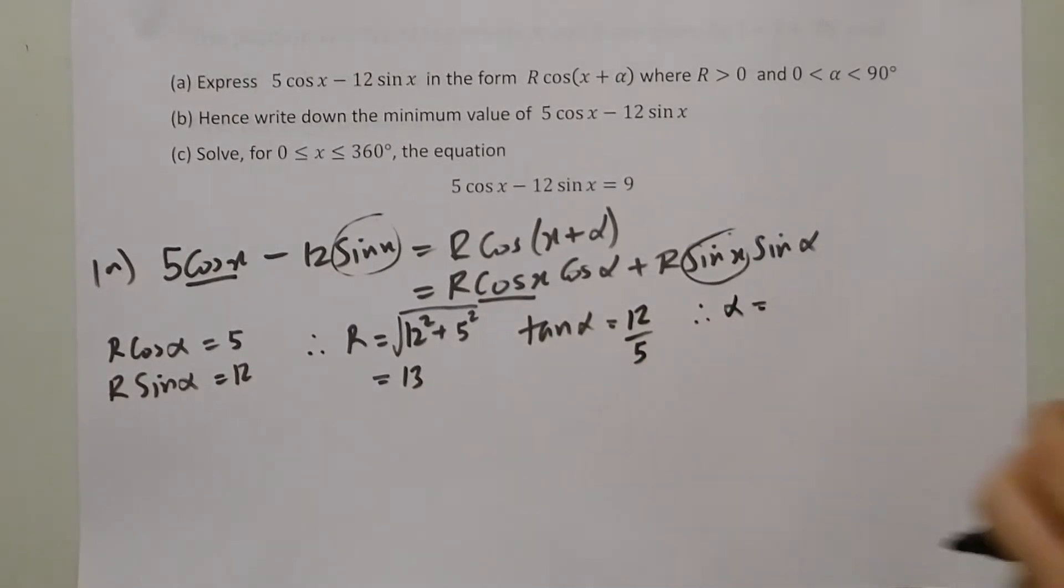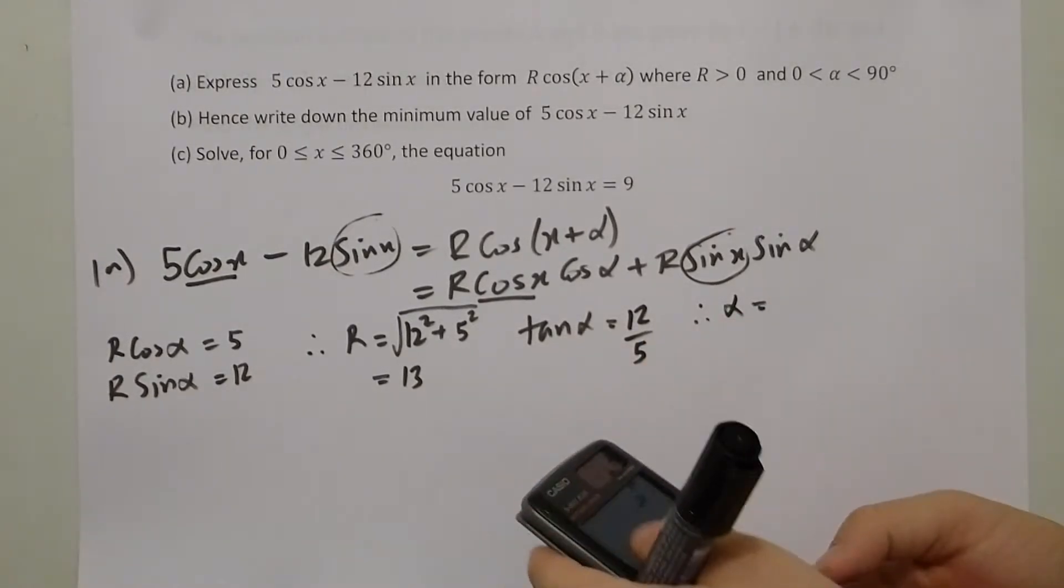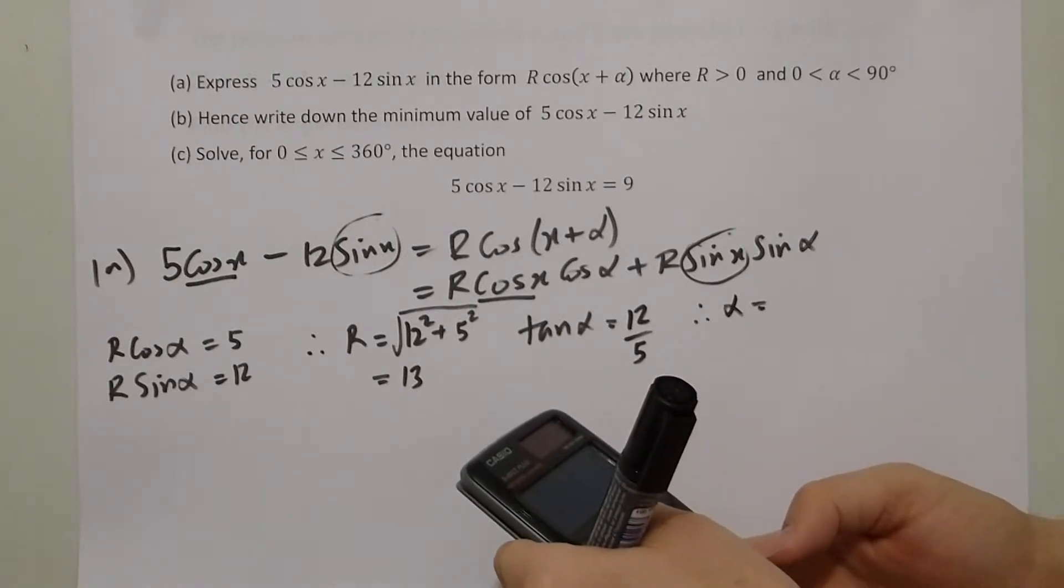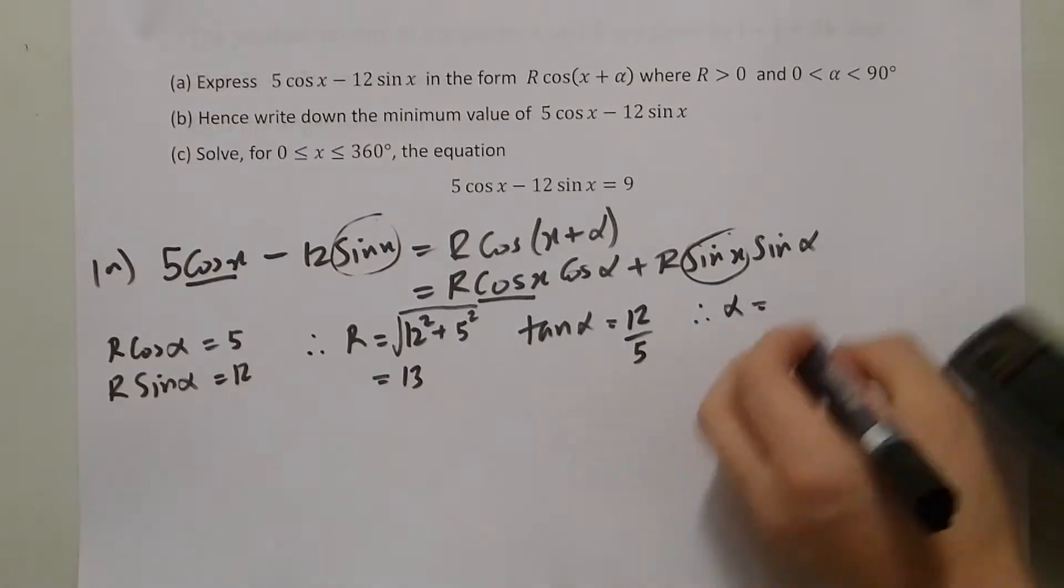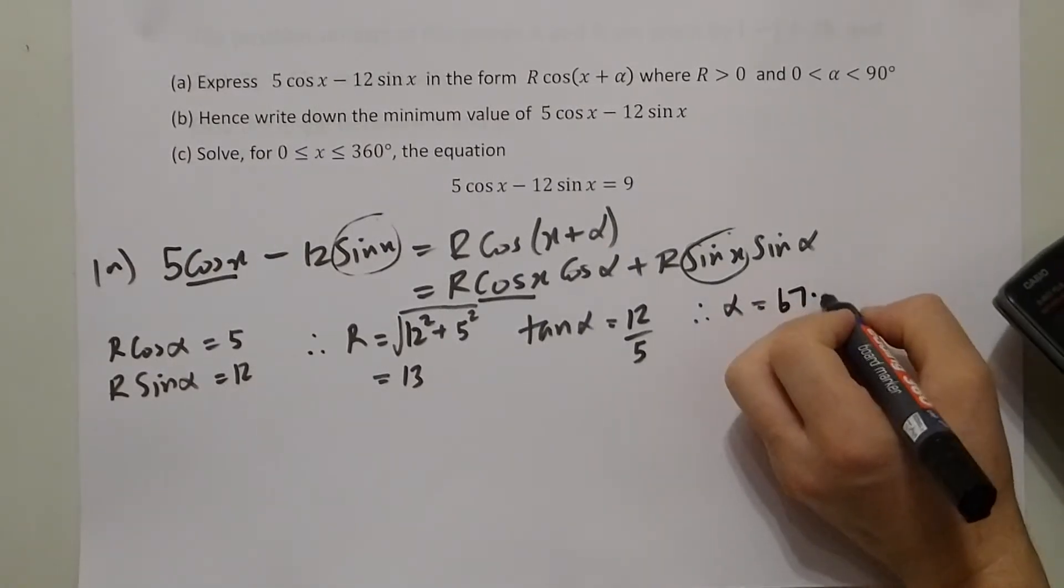Which means that α must equal the inverse tan of 12 over 5, which is 67.4.